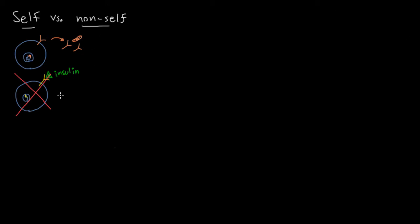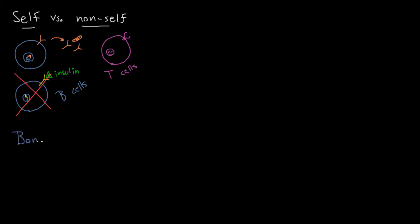Everything we're saying about B cells is equally applicable to T cells. T cells also have a T cell receptor that's generated at random, and you only want that T cell receptor to react to foreign, non-self things and not to self things. The processes we're going to talk about are equally true — maybe in some cases even more so — for T cells than B cells. So let's go to the bone marrow to figure out how this process works.